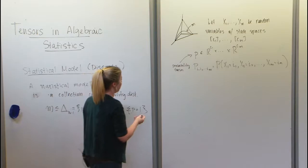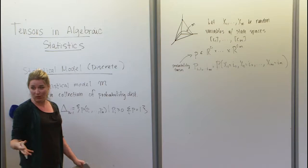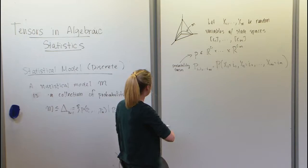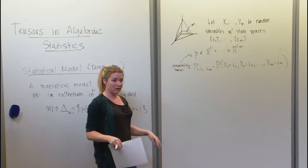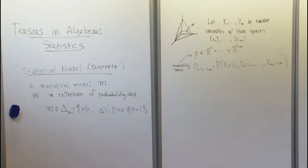We can ask questions like maximum likelihood estimation and compute the maximum likelihood degree under certain models. What we're going to do is take the algebraic closure of the model. The geometric information about the closure of our model — which is an algebraic variety — gives us statistically relevant information that we can use.